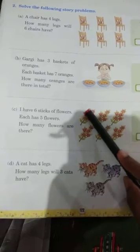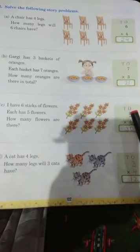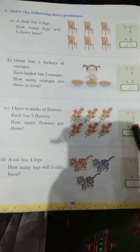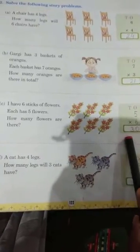Toh, ek six me kitna hai flowers? One, two, three, four, five. Ek six me five flowers hai. Toh, cheto stick hai. Toh, tumhara six into five. Ya, five into six bhi kar sakti hai. Toh, thirty ho jayega, okey?